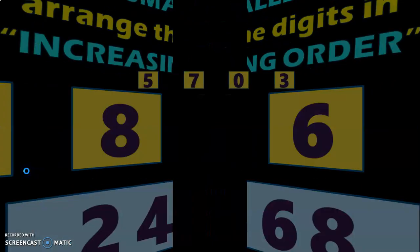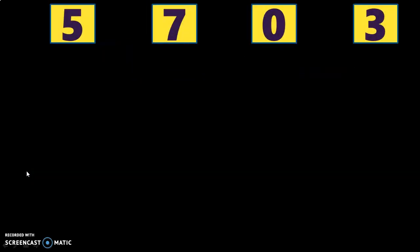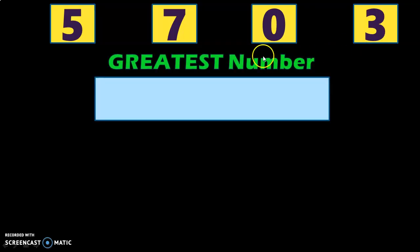Let us see one more example to understand this concept better. Here we have four digits: 5, 7, 0 and 3. Now you will have to form the greatest number using these four digits. As per the rule, you will have to arrange the numbers in descending order. The key to remember is: for getting the biggest number, arrange from big to small — biggest number, so big to small. That way it will be easy for the child to remember.